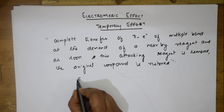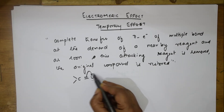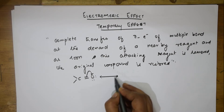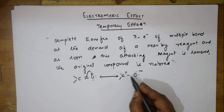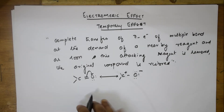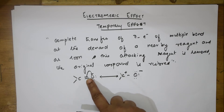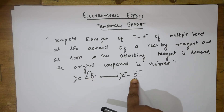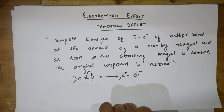Let me take a carbonyl compound. There is a shift of pi electrons — these two will be in resonance, giving a plus and a minus. This is a complete transfer of the shared pair of electrons of the multiple bond. The shared pair of electrons is transferred towards the more electronegative atom. Based on this more electronegative atom, we also have types of electromeric effect. Let us come back and see the types of electromeric effect.